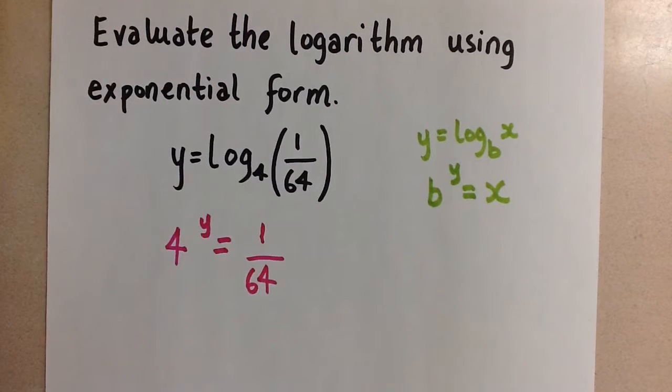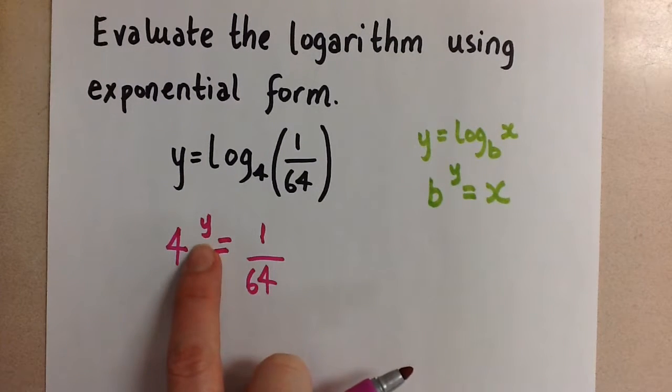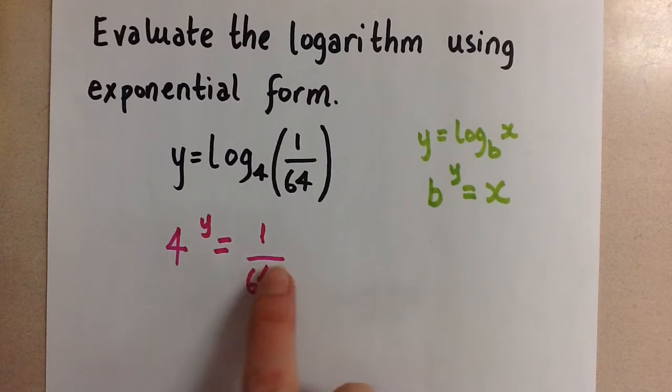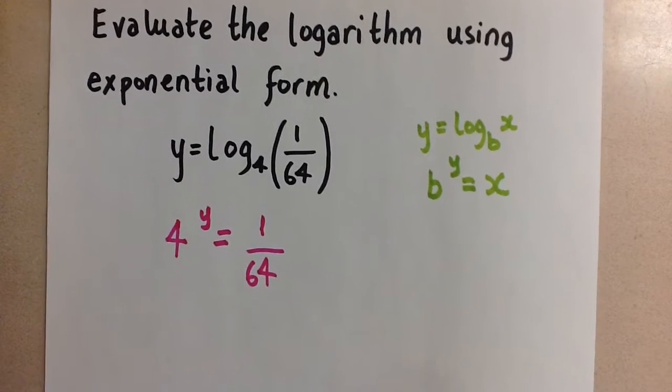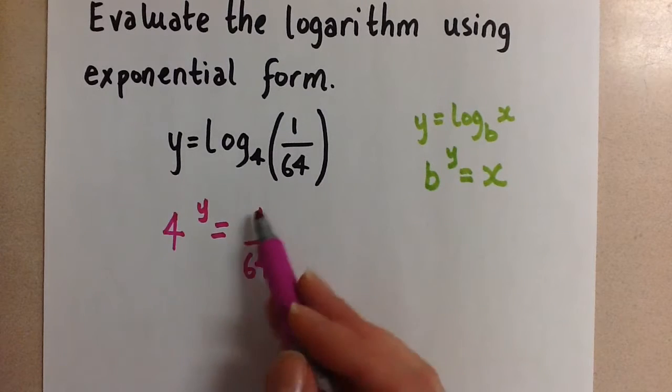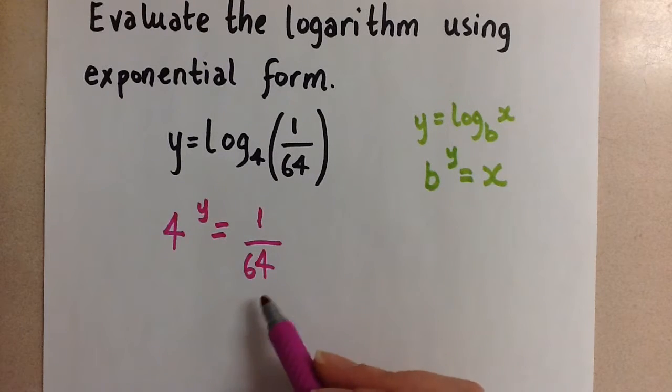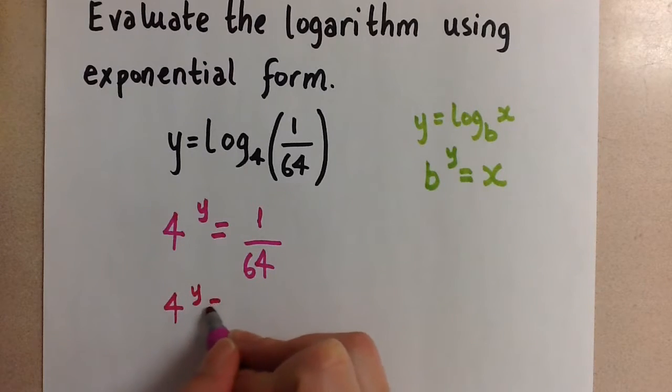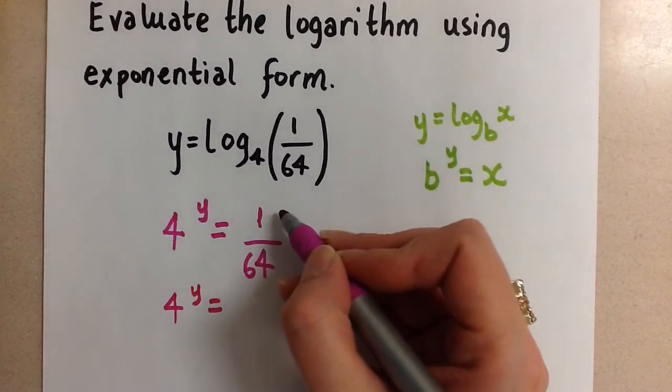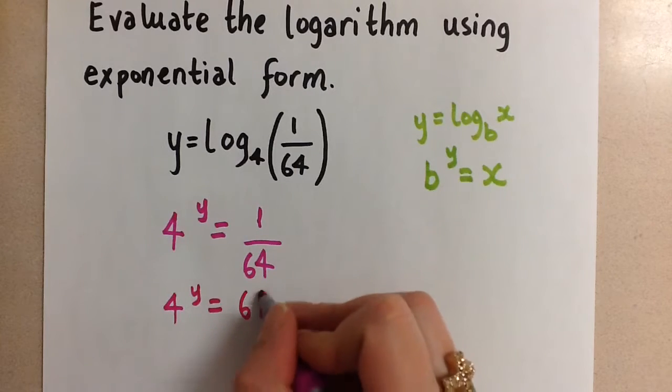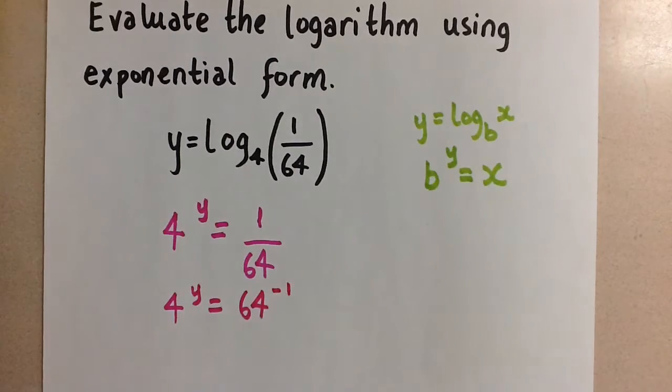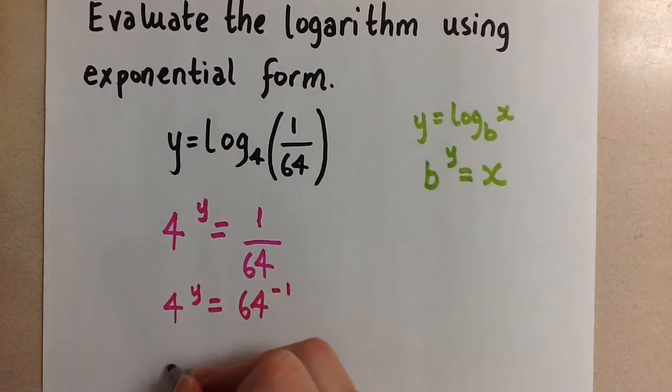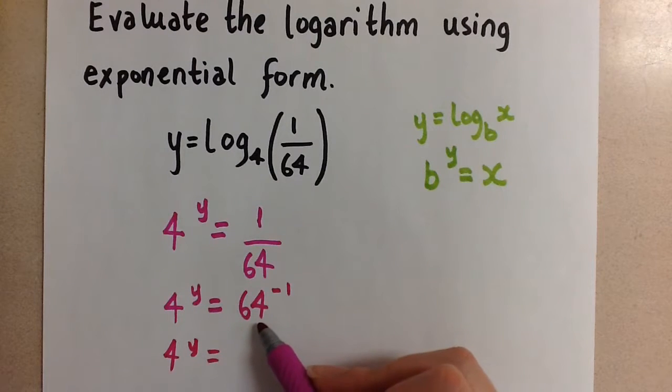So now we can solve for the exponent there by getting the base the same. This is an exponential equation, and we know how to solve these. So let's get a base of 4 on the right hand side. Let's bring the 64 into the numerator. We can do that by putting a negative exponent on it.